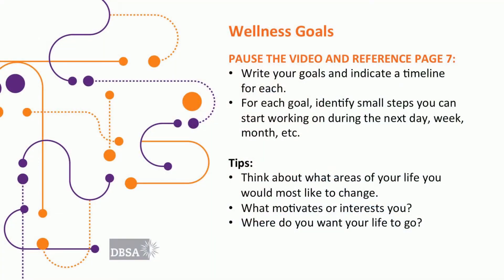These steps should be small and specific, things you could start on today. So sticking with your original example, you may write: Join a meetup.com group and attend an event within the next month. Go to the post-support group social gathering on Tuesday. Strike up a conversation with that woman I always see at the park this afternoon. Go ahead and pause the video so you can write up your goals.